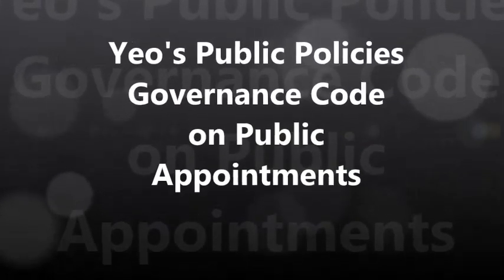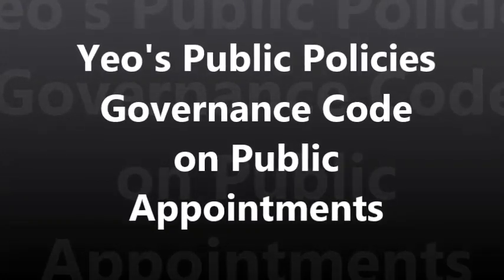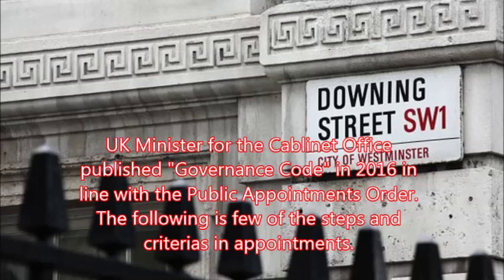Public Policies: Governance Code on Public Appointments. In the United Kingdom, there is a Commissioner for Public Appointments. The Commissioner is appointed by the King and is independent of the government and the civil service. The UK Minister for the Cabinet Office published the Governance Code in 2016 in line with the Public Appointments Order.